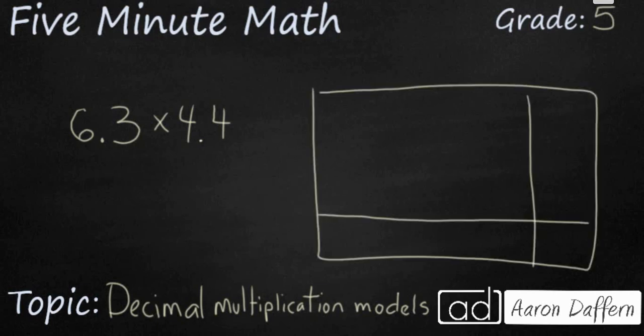Remember, you draw a box with 4 sections that are unequal. And you go ahead and write your numbers here. You split it up here. 6 and 0.3, and 4 and 0.4. And then you perform 4 separate multiplication problems.